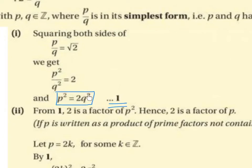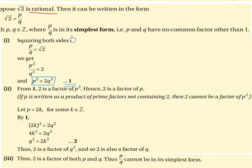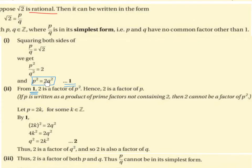We are going to call this equation number 1. So this was step 1. Step 2: from equation number 1, p squared equals 2q squared that we just created in step 1. We have p squared equals 2 multiplied by q squared, therefore 2 is a factor of p squared — 2 multiplied by something gives us p squared; in this case, 2 multiplied by q squared gives us p squared. So 2 is a factor of p squared.